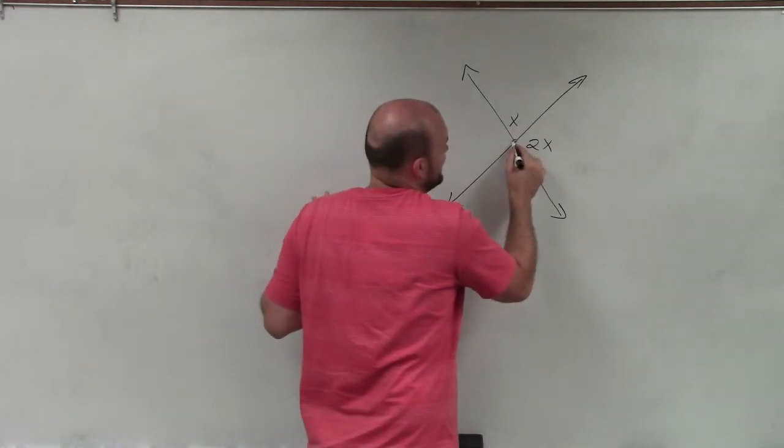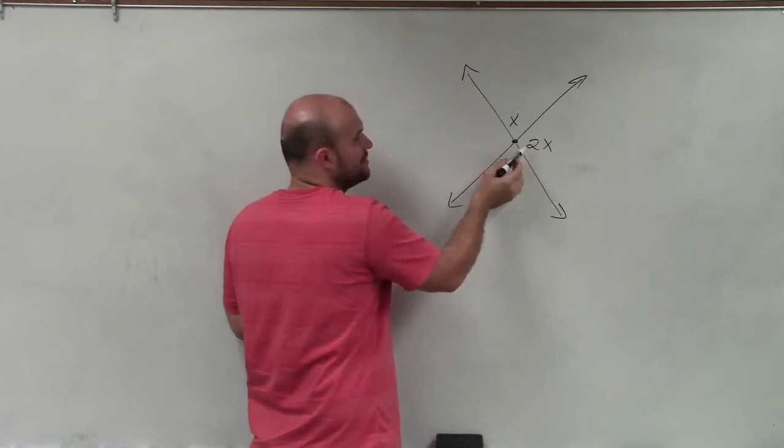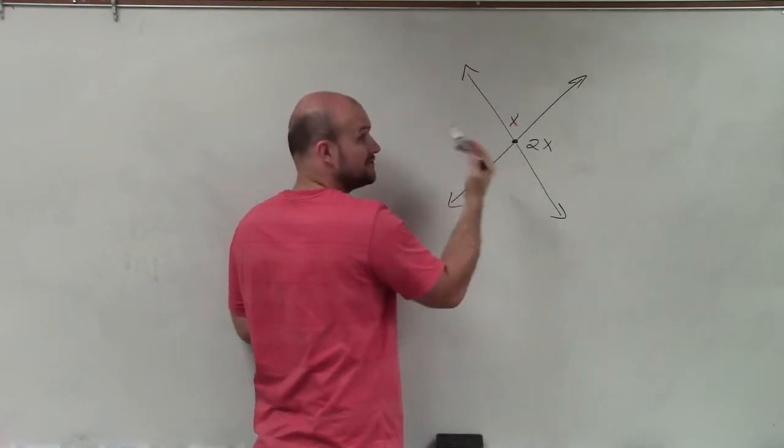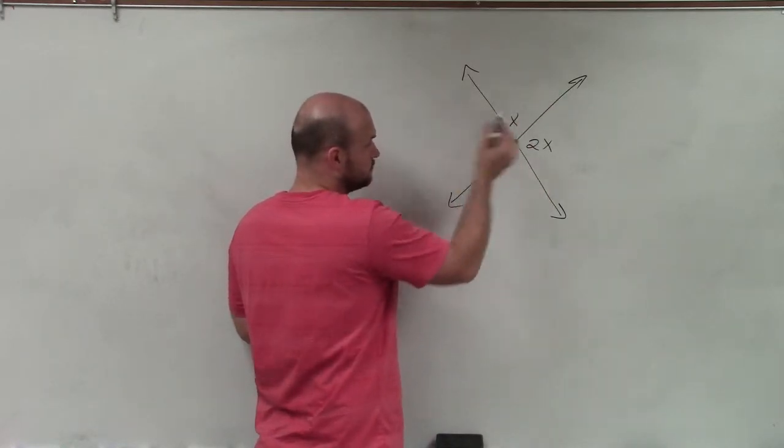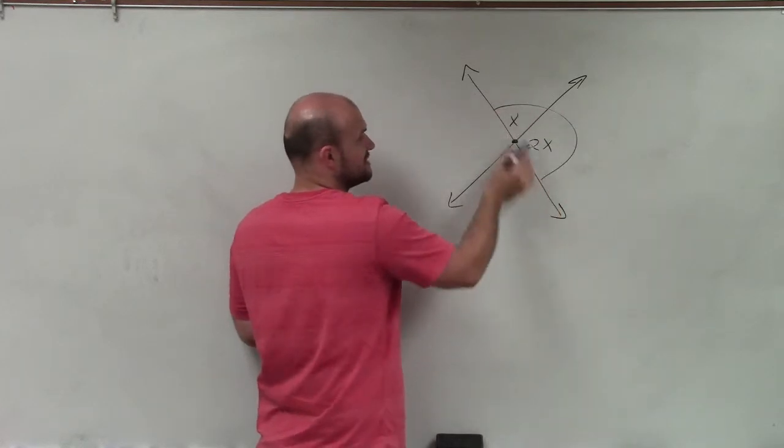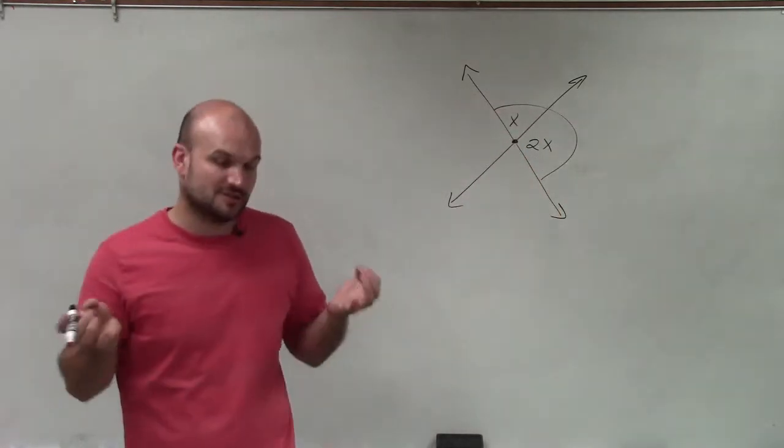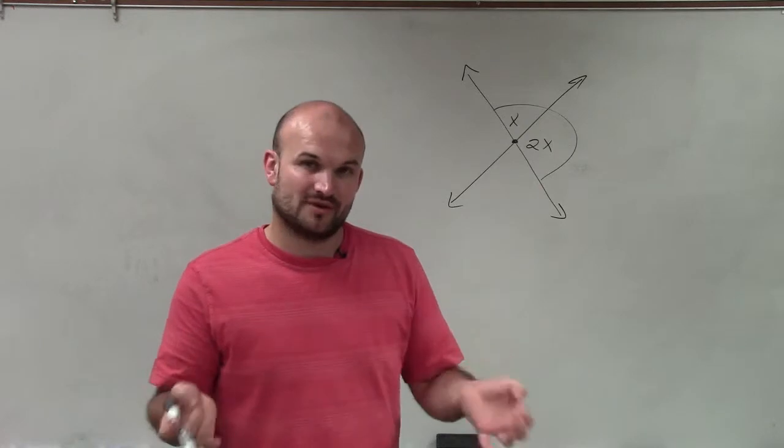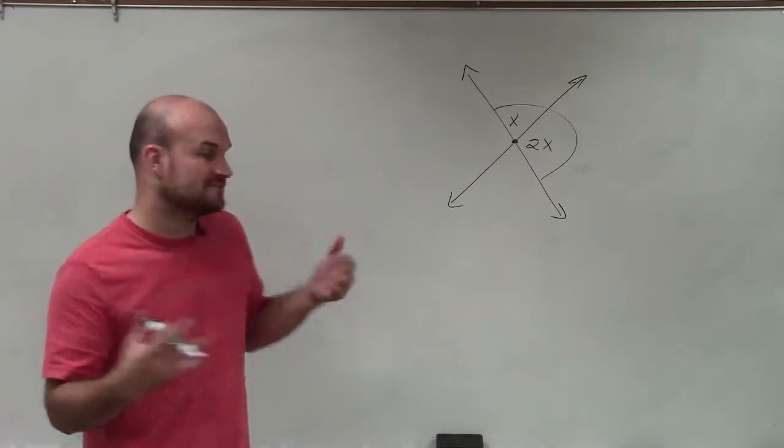So without being too obvious, we obviously see that these two share a side, so they're not vertical angles. And we can also see that these two angles, when added up together, make up a straight line. So they are a linear pair, and therefore they are supplementary, meaning they add up to 180 degrees.